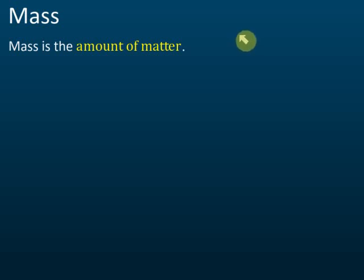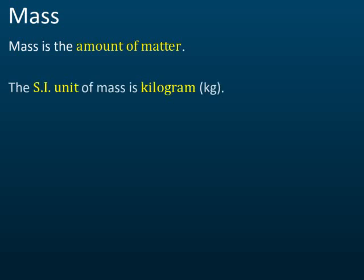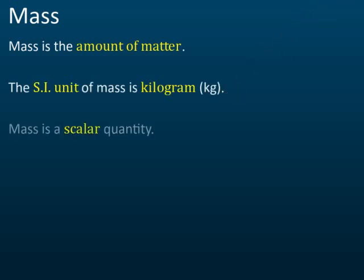Mass is the amount of matter — how much matter you have in an object. The SI unit is kilogram, and it is a scalar quantity, meaning it has no direction. That's the first thing you need to know.